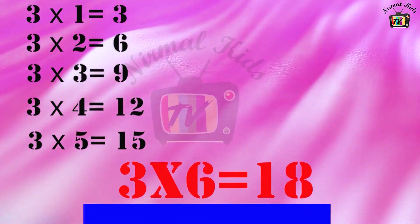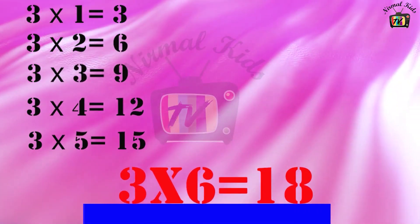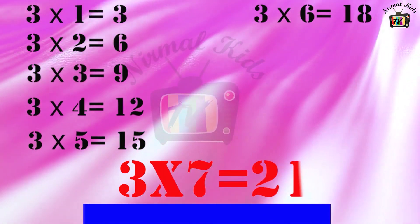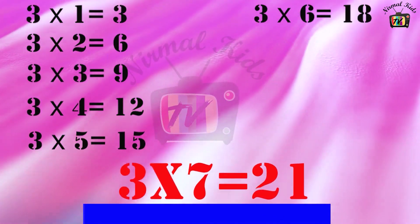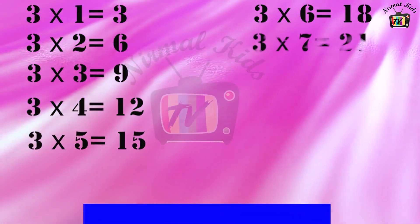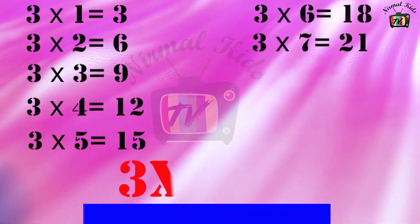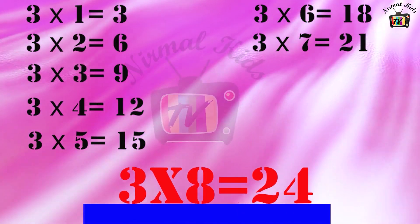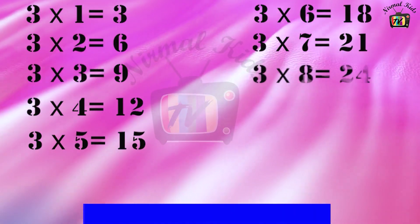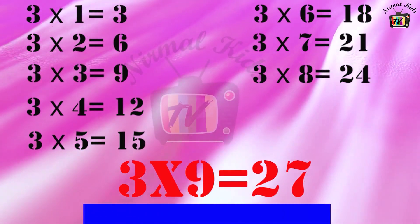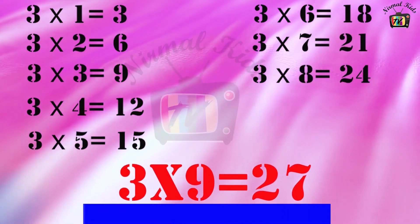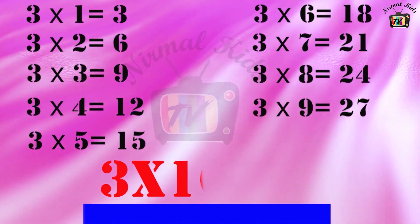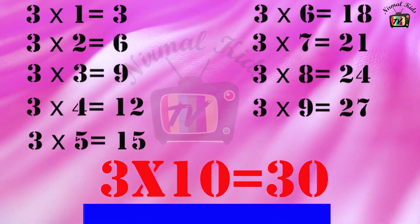3 6 is 18. 3 7 is 21. 3 8 is 24. 3 9 is 27. 3 10 is 30.